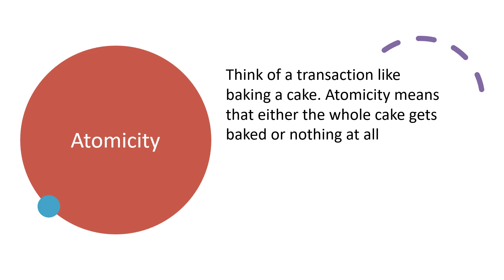First, Atomicity. Think of a transaction like baking a cake — either the whole cake gets baked or nothing at all. If something goes wrong while baking, like you run out of sugar, you don't end up with half a cake. You start over from the beginning, keeping things neat and complete. This is what atomicity is all about.